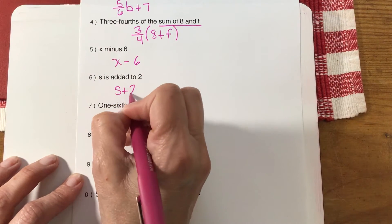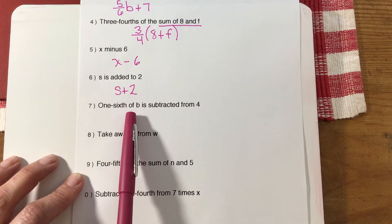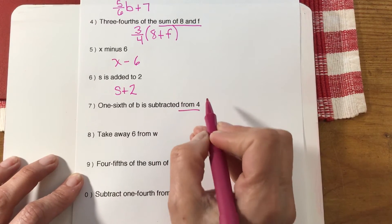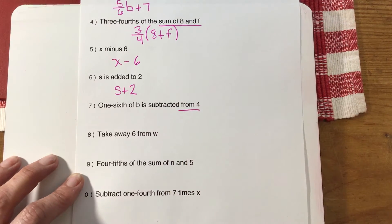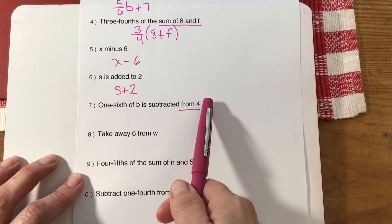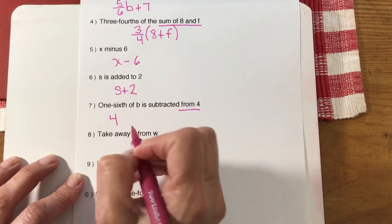Here's another one: one-sixth of b is subtracted from four. This is important. We don't want one-sixth b minus four. We have to start with the four first because this is subtracted from this. So make sure you have it in the right order. If you don't, please fix that because you may see that again: four minus one-sixth b.